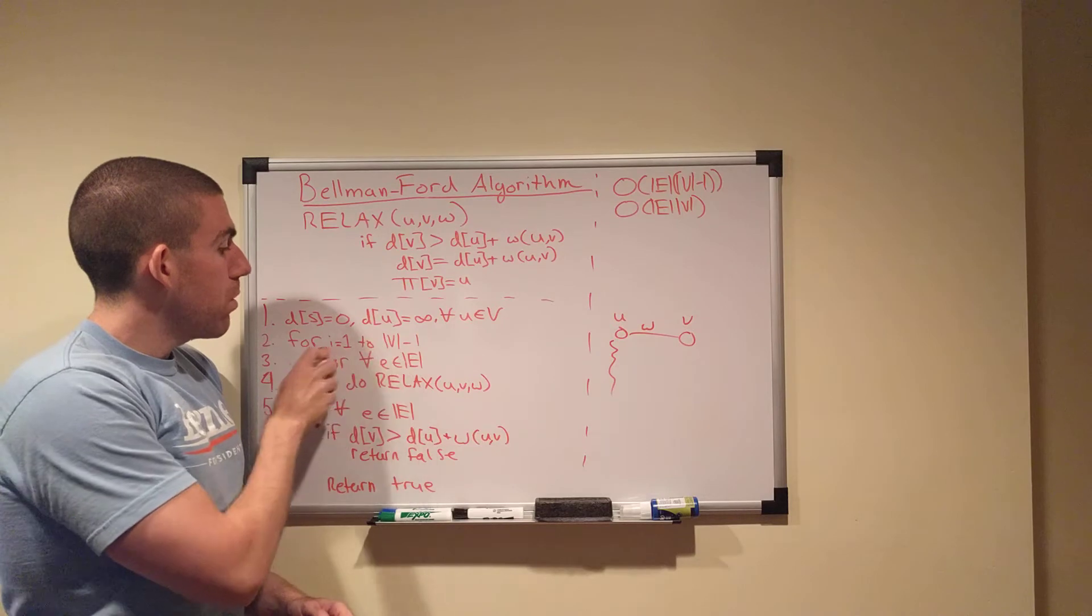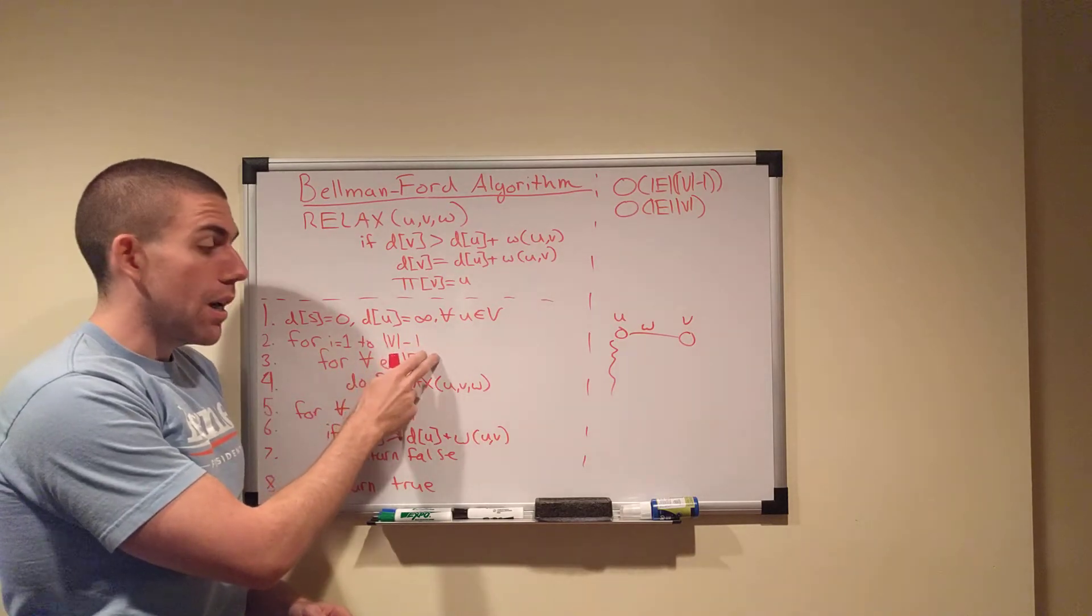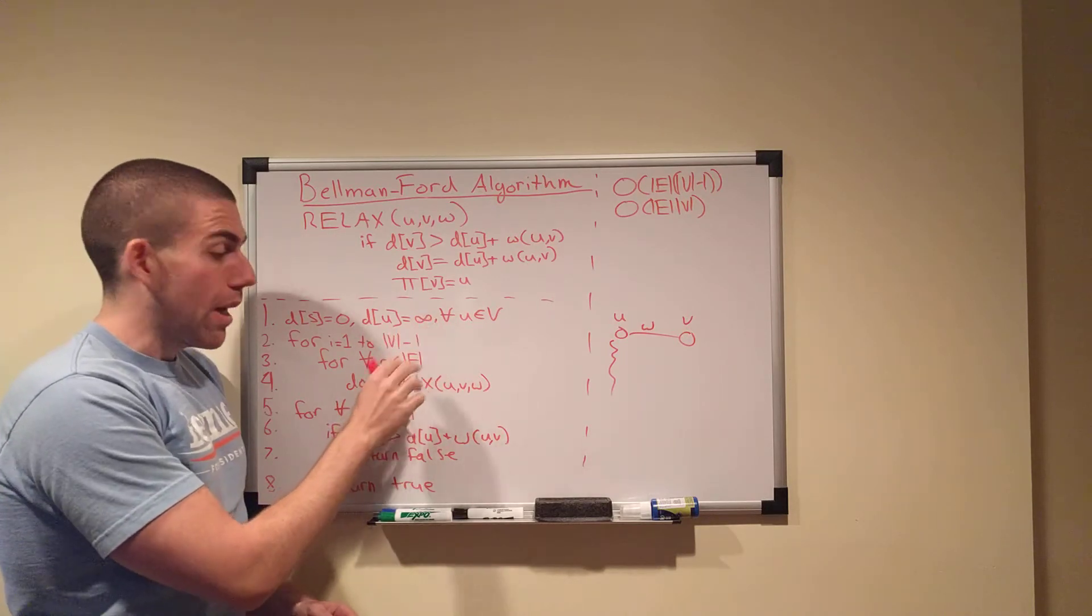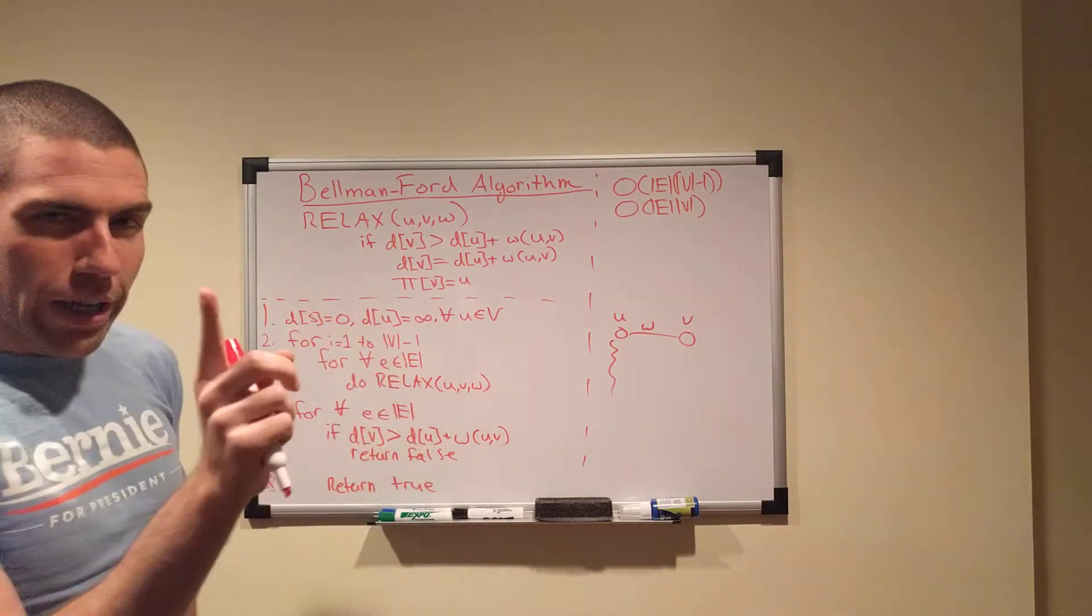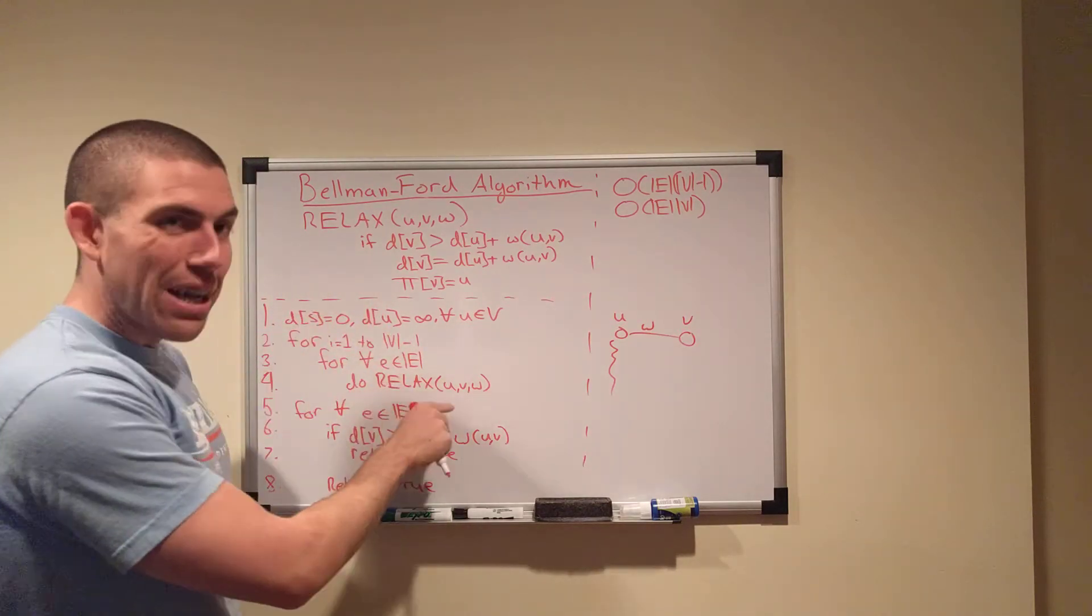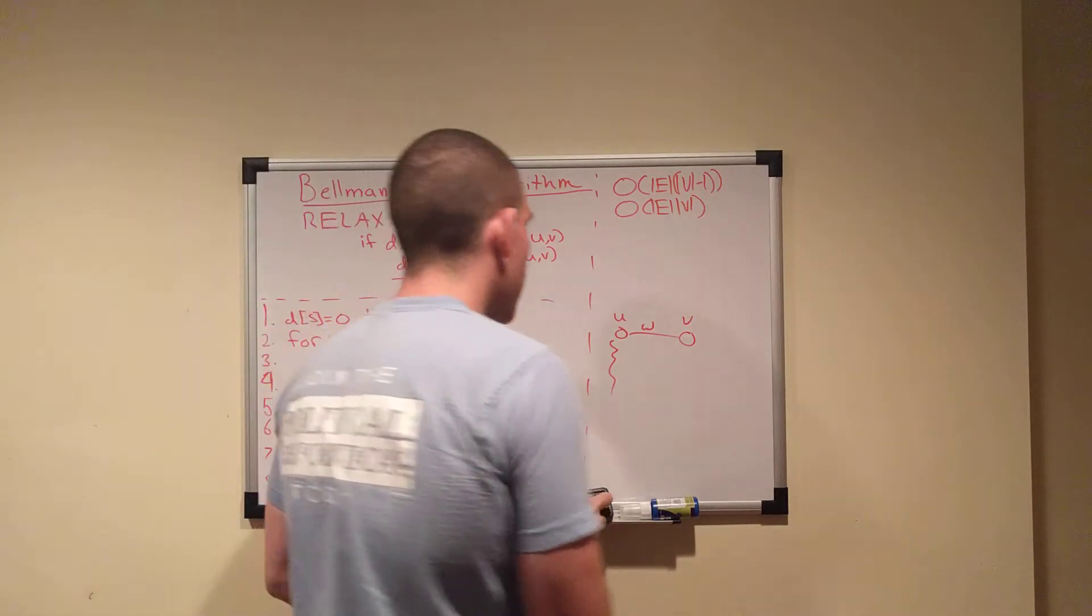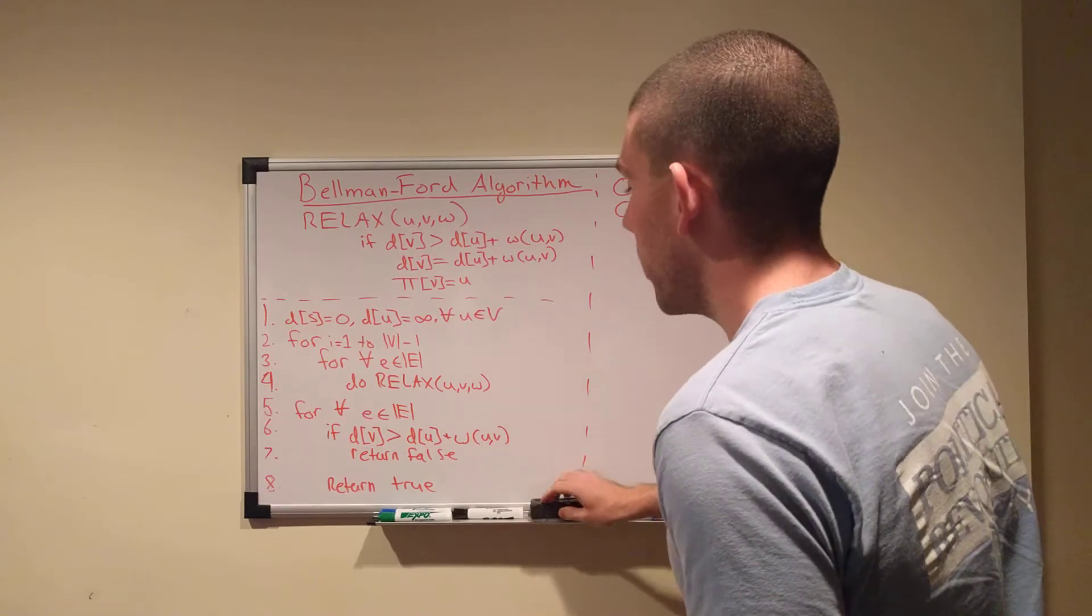And then, V minus 1 times, we're going to iterate through every edge. And we iterate through V minus 1 times. We're going to relax every edge, and we're going to do that V minus 1 times. Now, the reason we're doing it V minus 1 times is pretty intuitive, actually.